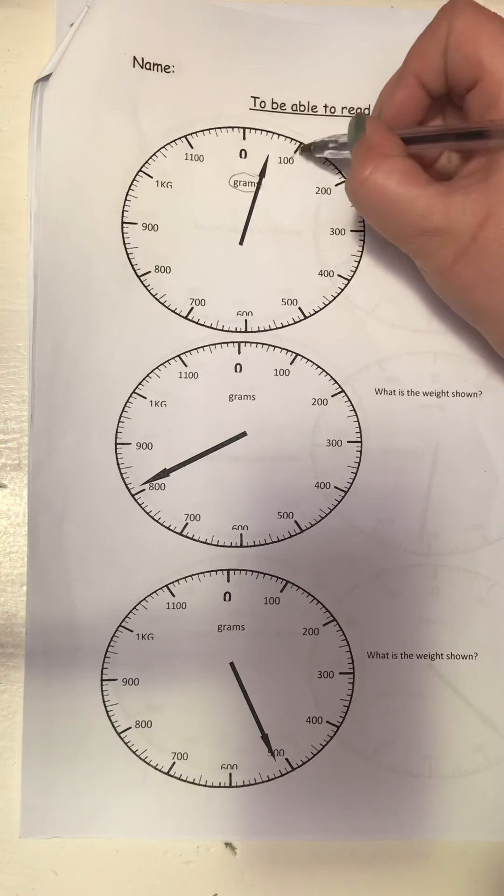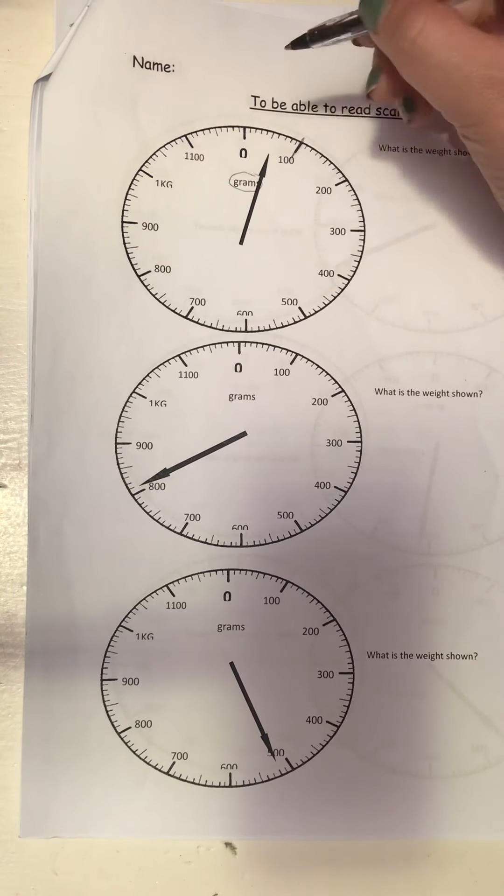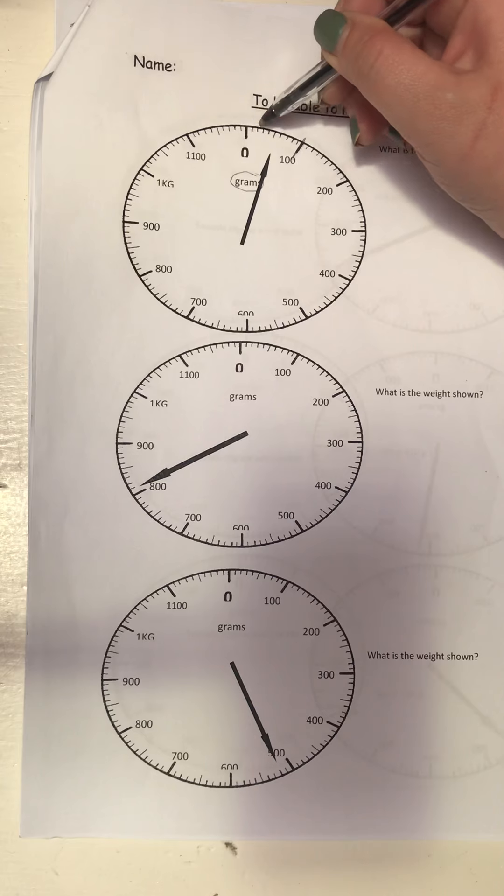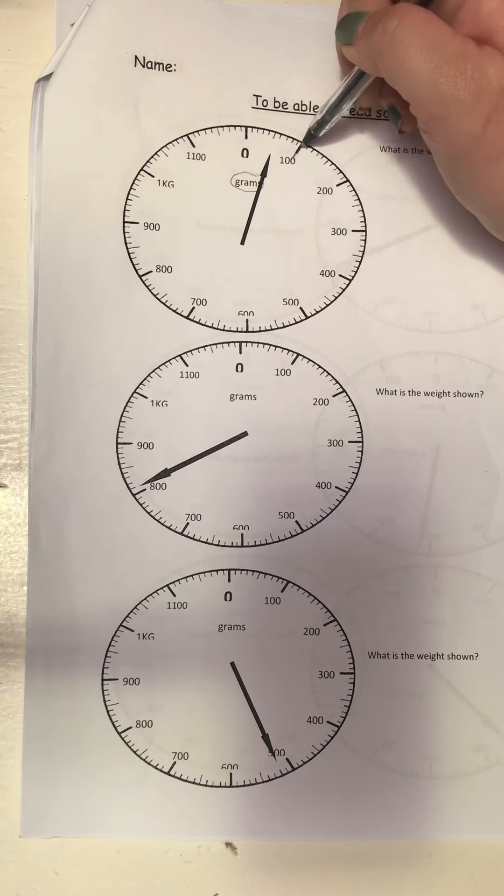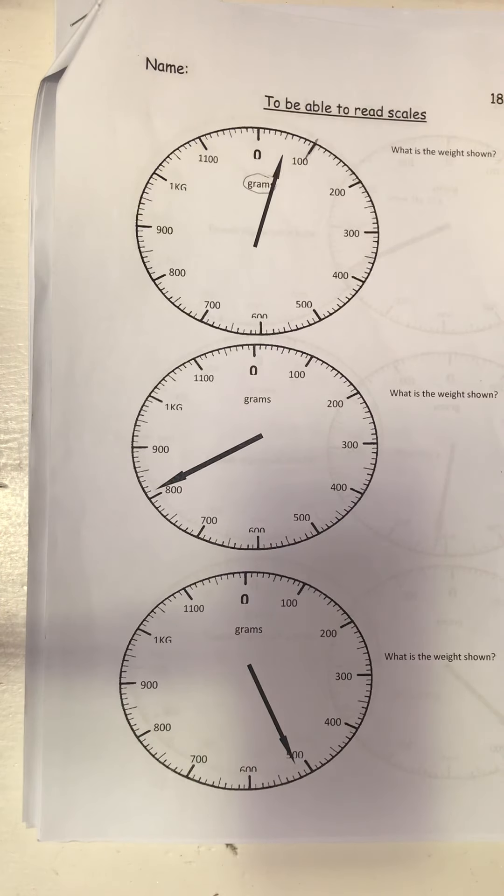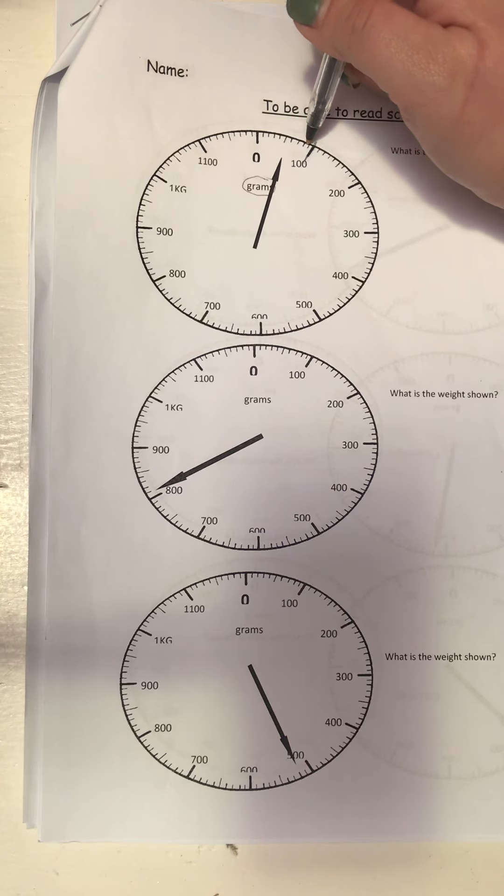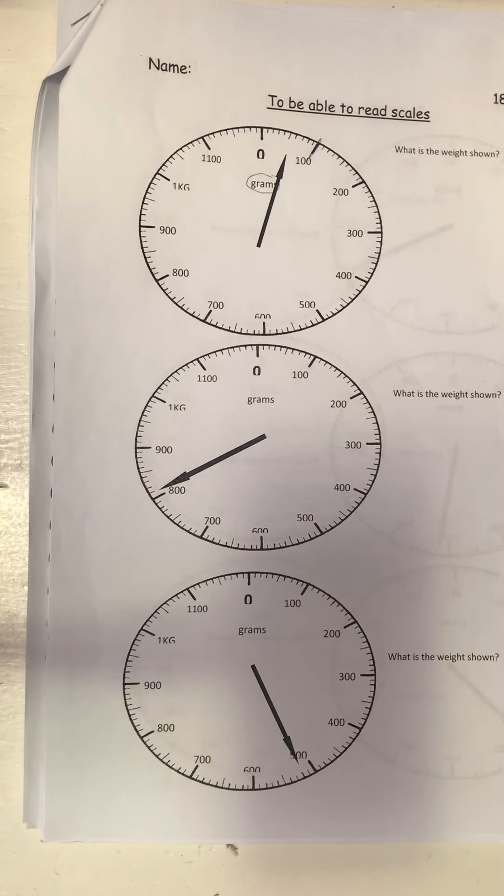For example, this one shows me 100. This tells me that it's grams, but this shows me 100. Now I need to go figure out how much does each one of those little lines count for. So I go and I say, okay, 1, 2, 3, 4, 5, 6, 7, 8, 9, 100. No, that does not make sense. Let's try the next one.